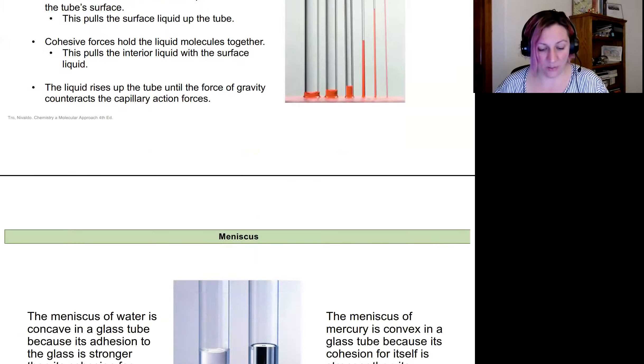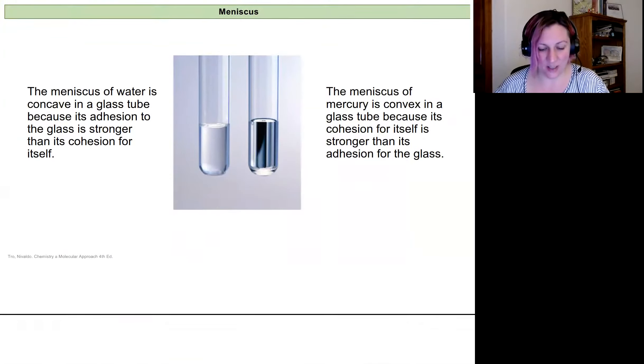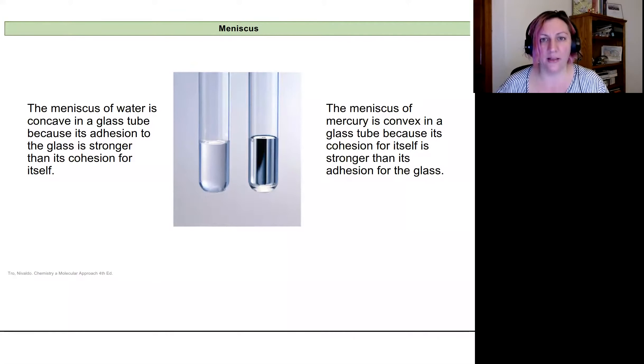Now, this is also going to apply with how we observe meniscuses. And so we've been reading volume using graduated cylinders and other instruments. And so we've been using the meniscus to read that volume. And we always read from the bottom.